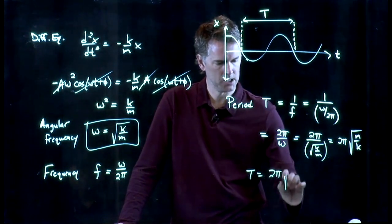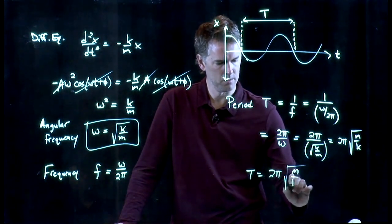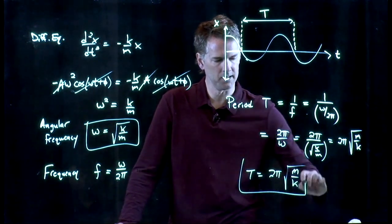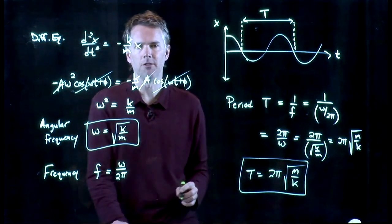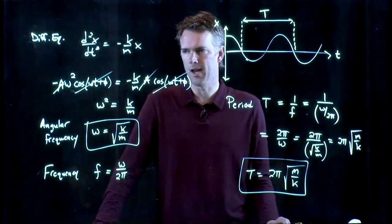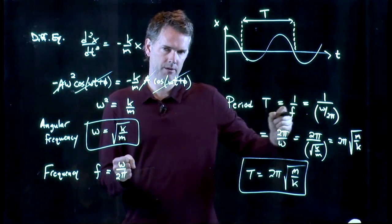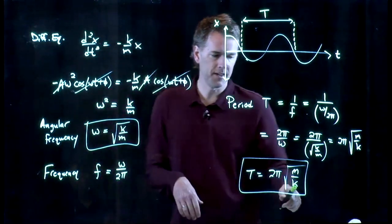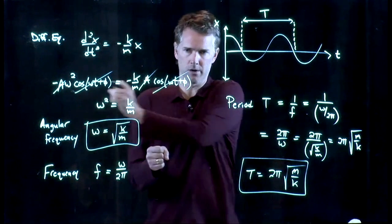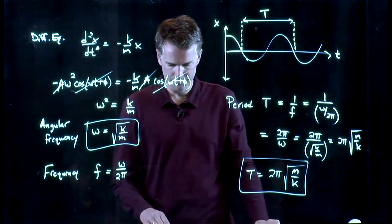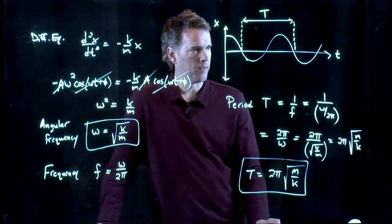So when you have a block on a spring, what's the period of that oscillation? It's that: 2 pi times the square root of m over k. If I have a bigger block, it takes longer for it to go back and forth. If I have a stiffer spring, it takes shorter to go back and forth. So that's the period.